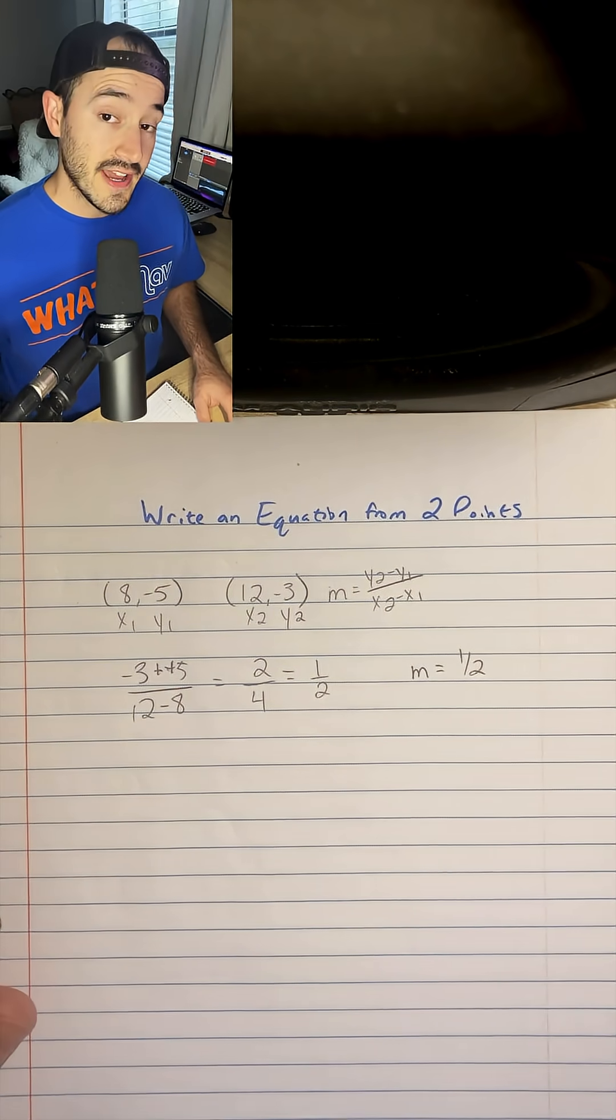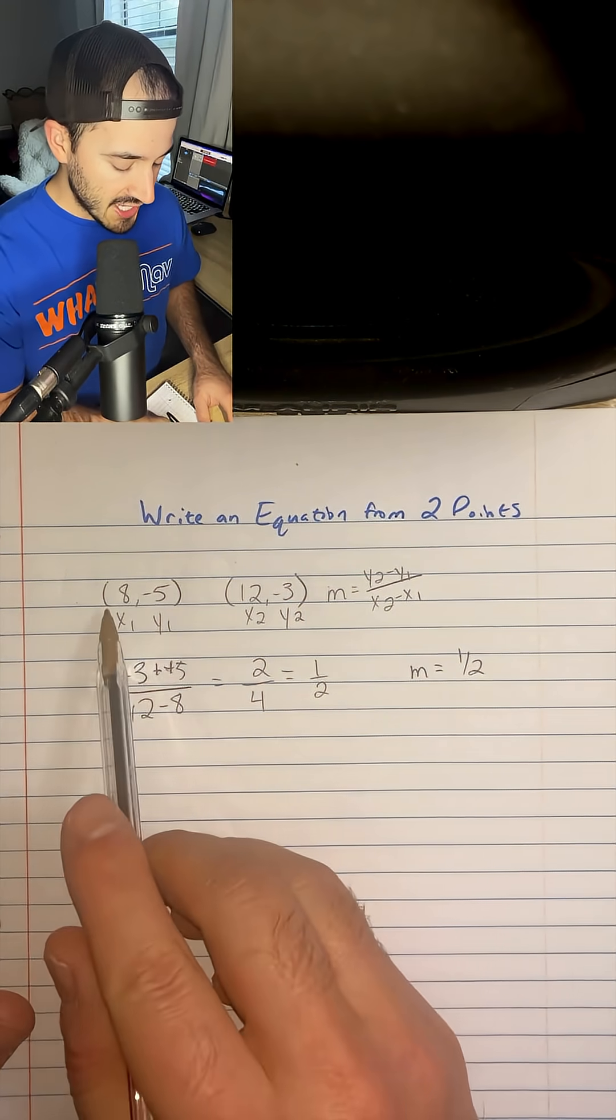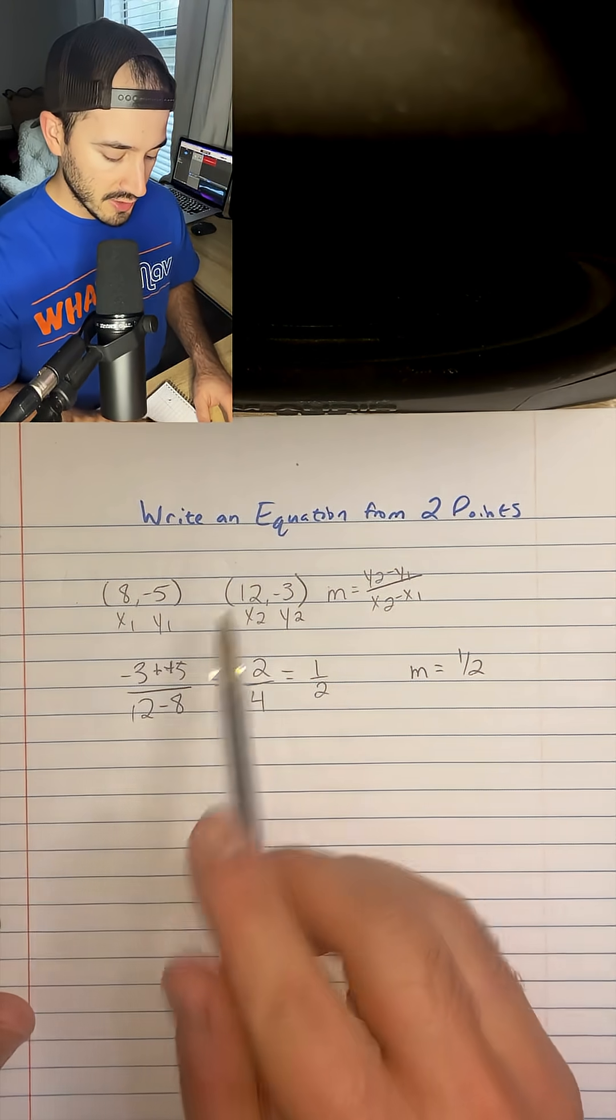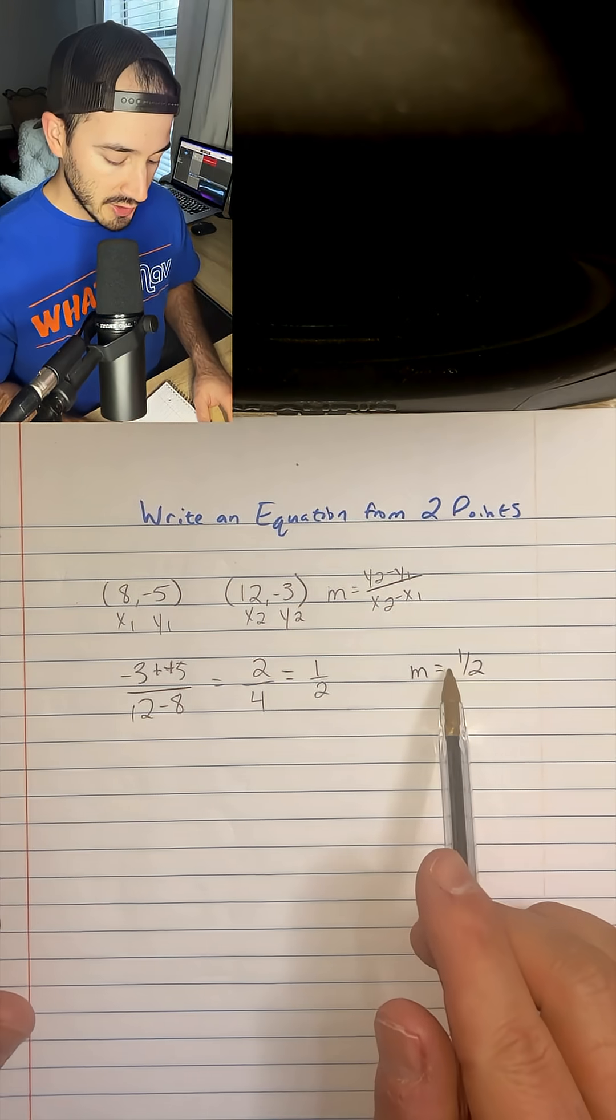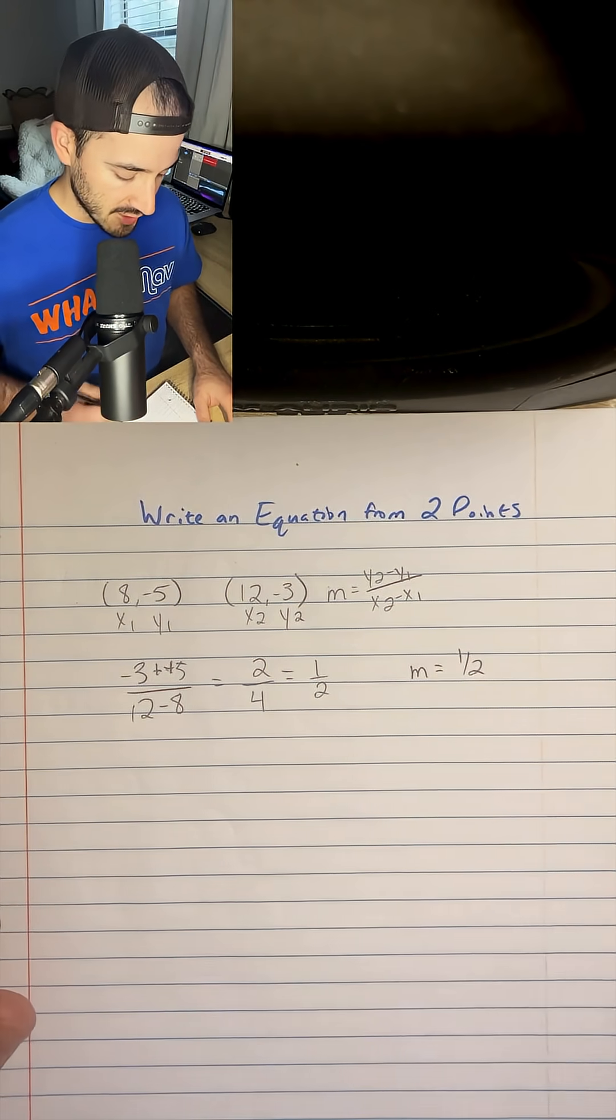So now that we have the slope 1 over 2 and we have a couple of points we can work with, I'm going to use point-slope form and plug in what we know to get an equation.